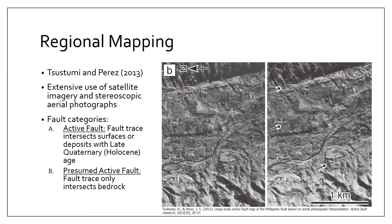In this study, they have two main categories for active faults. First is the active fault, defined as a fault trace which intersects surfaces or deposits with late Quaternary or Holocene age. So as long as the fault trace is intersecting recent deposits, it is classified as an active fault. They also have presumed active faults, which are faults intersecting bedrock. Note that these classifications are also based on field studies — they did field verification to validate their initial classifications.